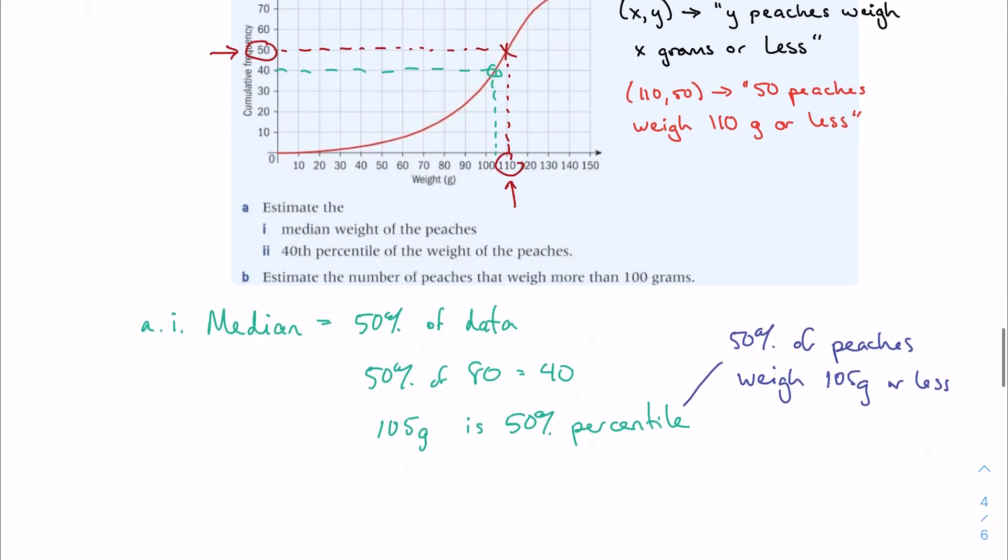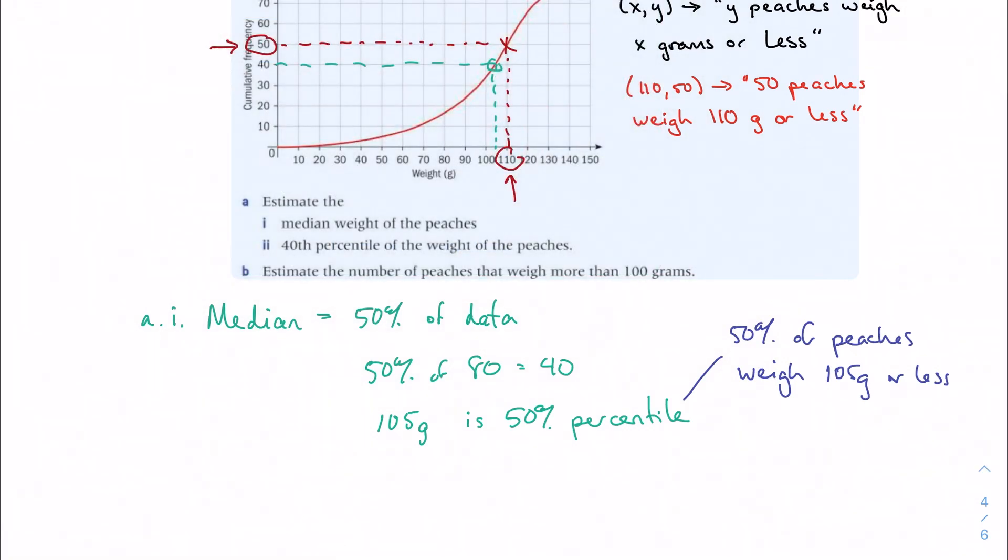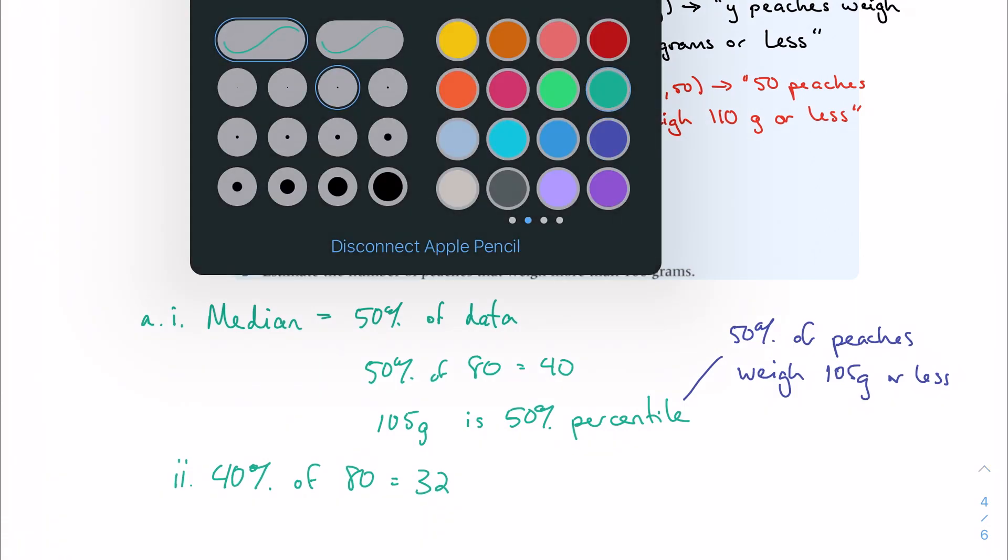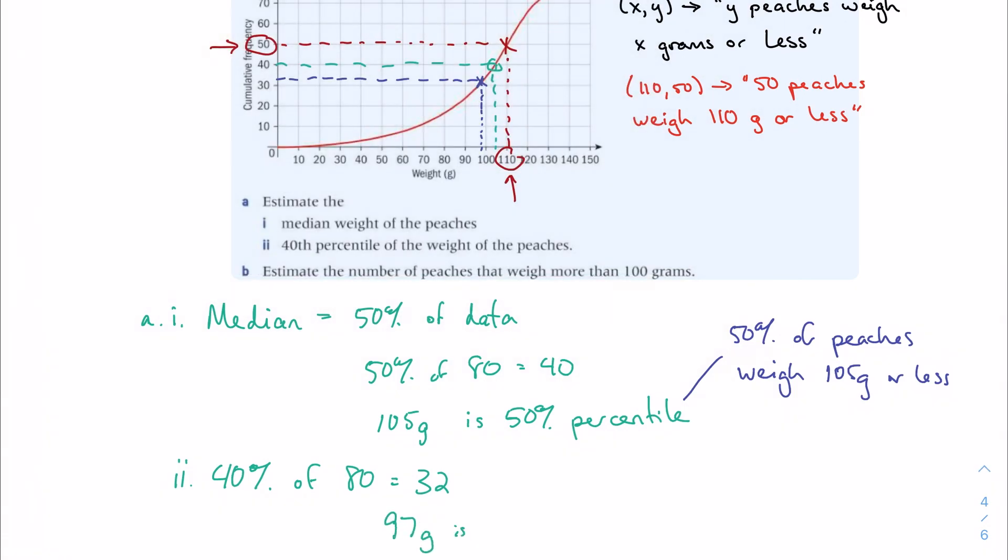You can do the same thing with 40%. That's the 40th percentile. So 40% of 80 is 32. So what is the maximum weight of the 32 peaches? So here's about 32, roughly, right here. Kind of estimate it to be maybe like 97-ish. So again, this is to say that 40% of the peaches weigh 97 grams or less.